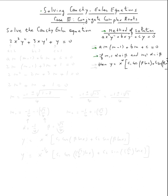And in the case if we get two complex solutions, alpha plus i beta and alpha minus i beta, then the solution will be x to the alpha times c one cosine of beta ln x plus c two sine of beta ln x.